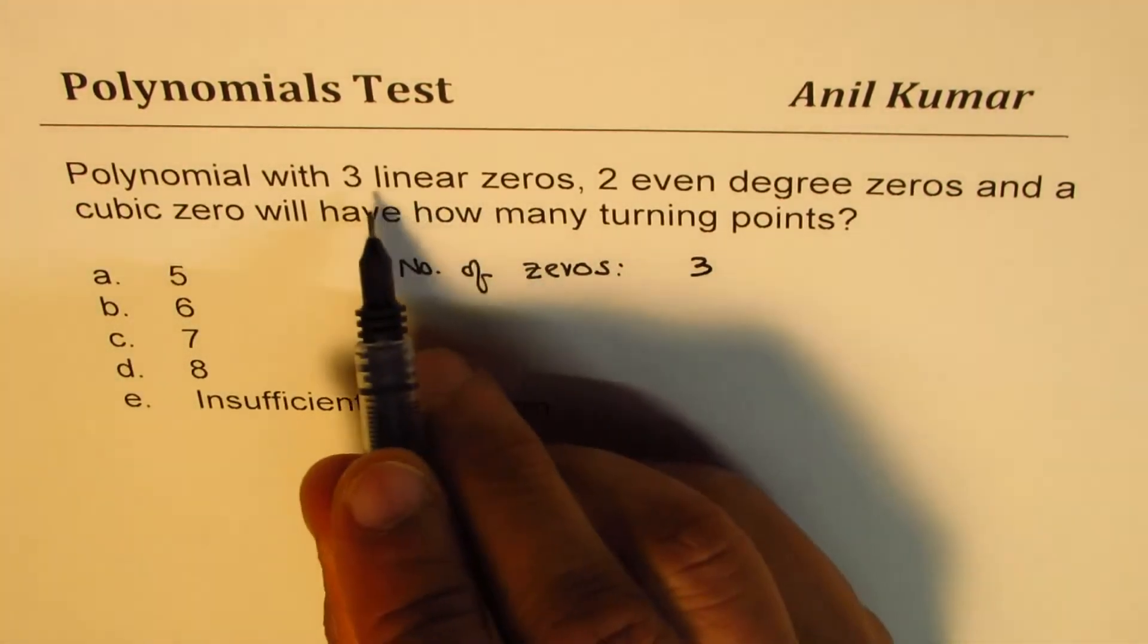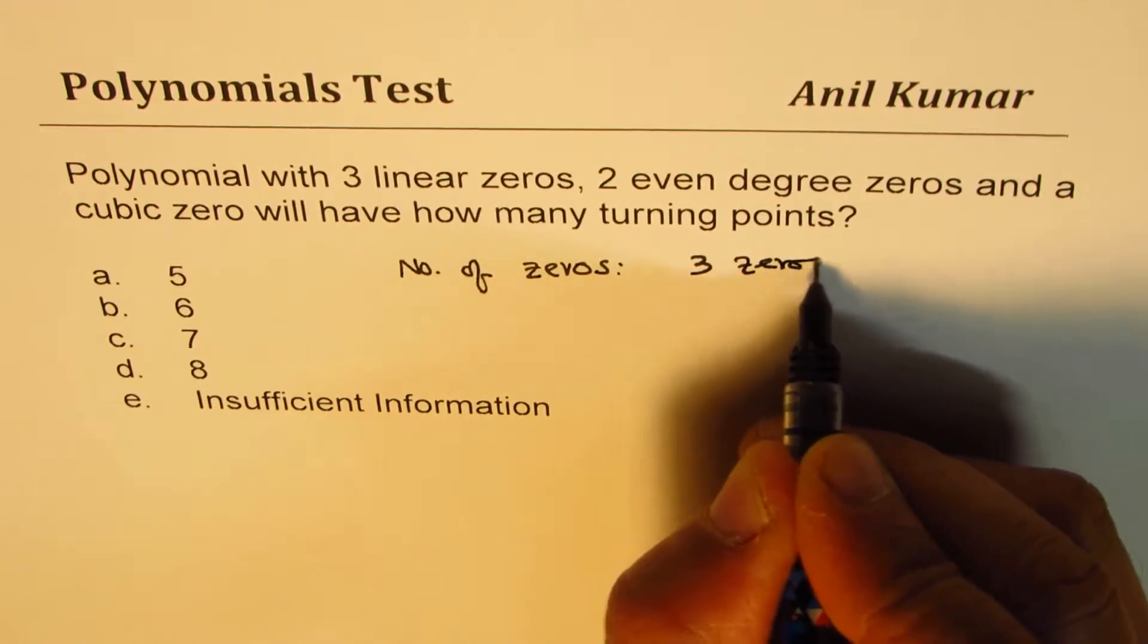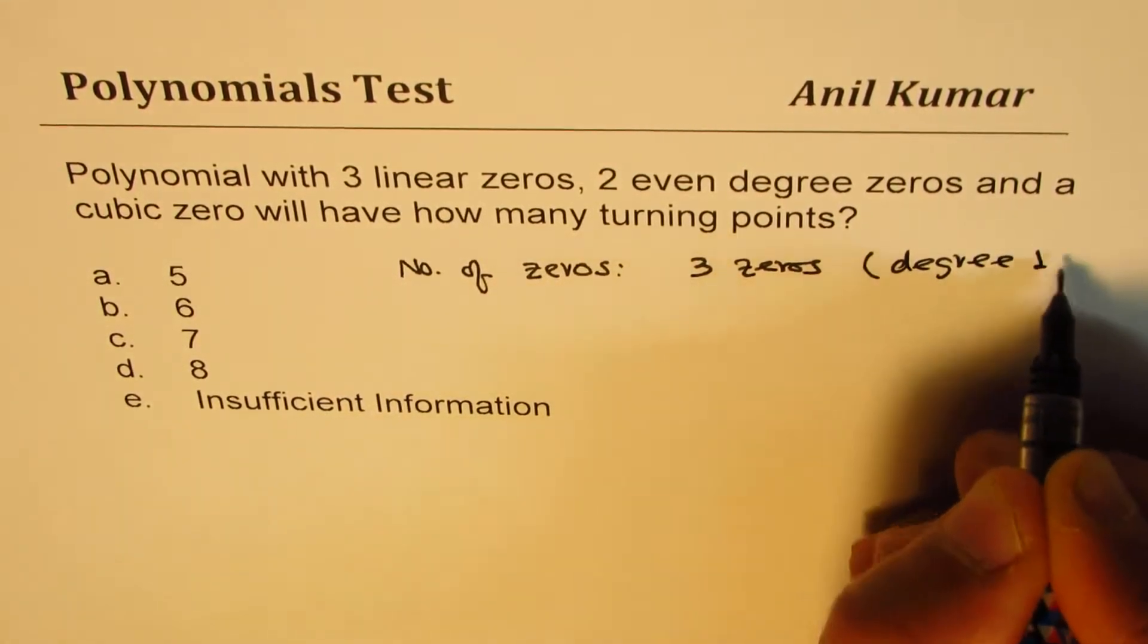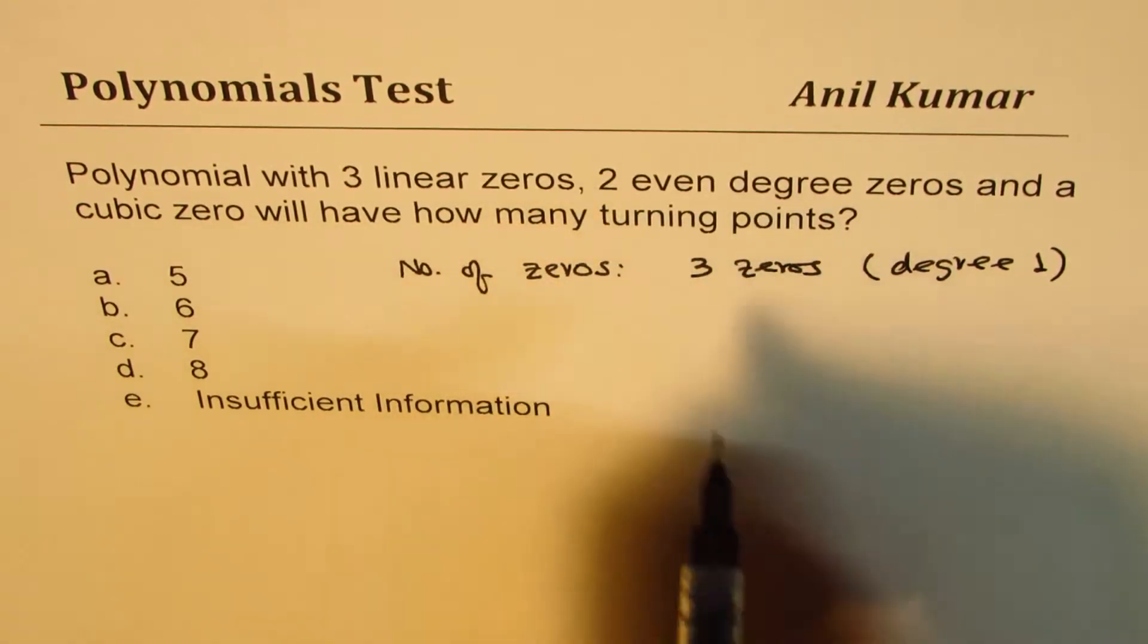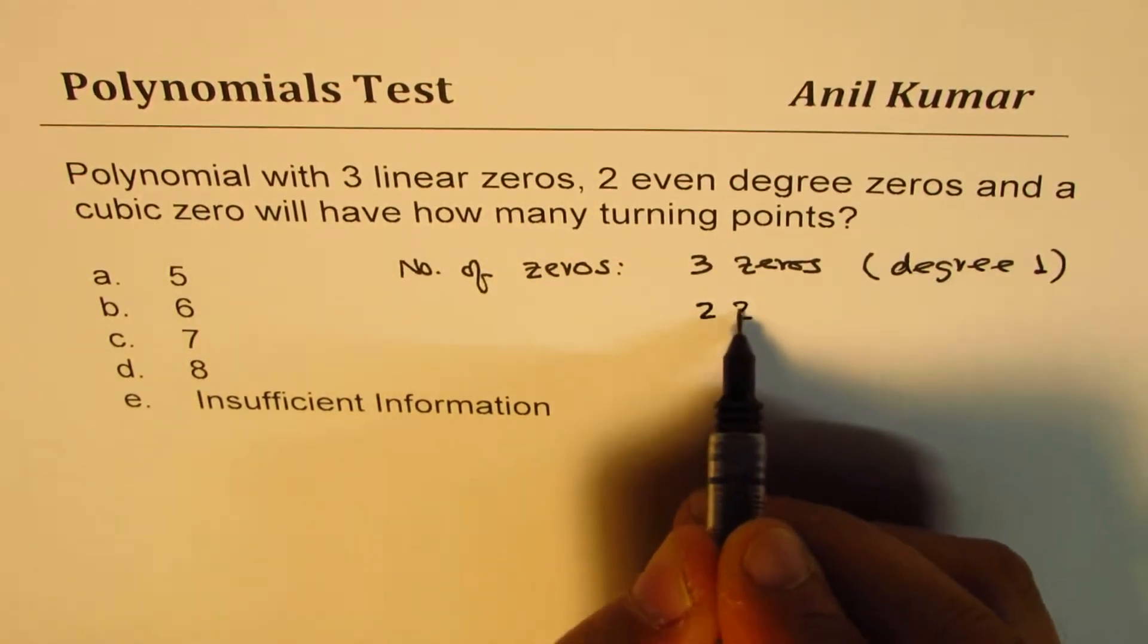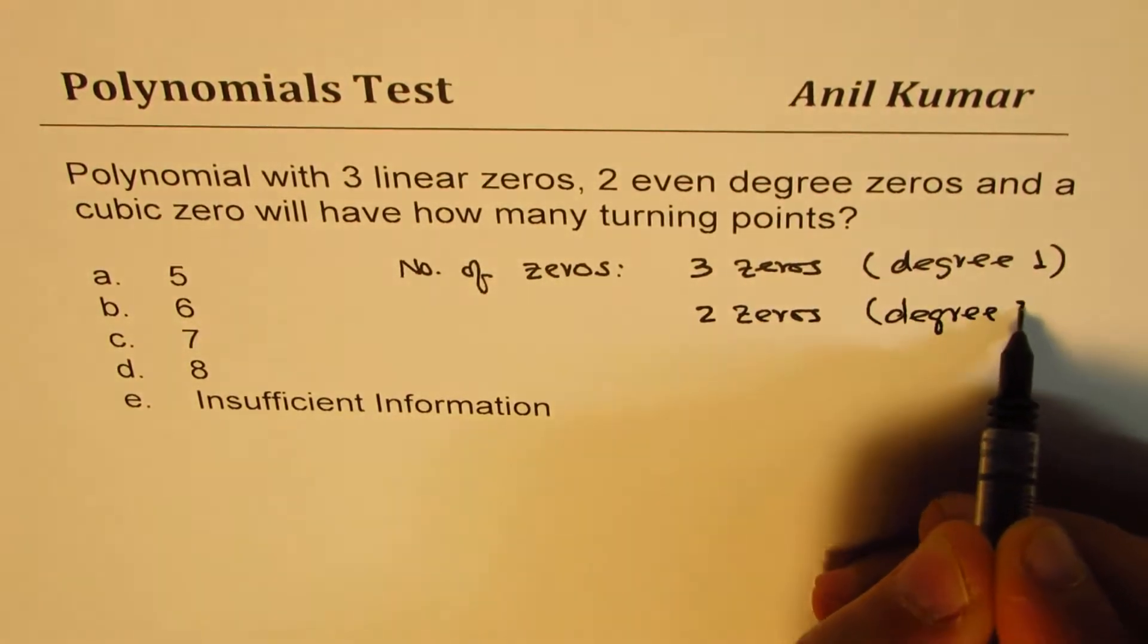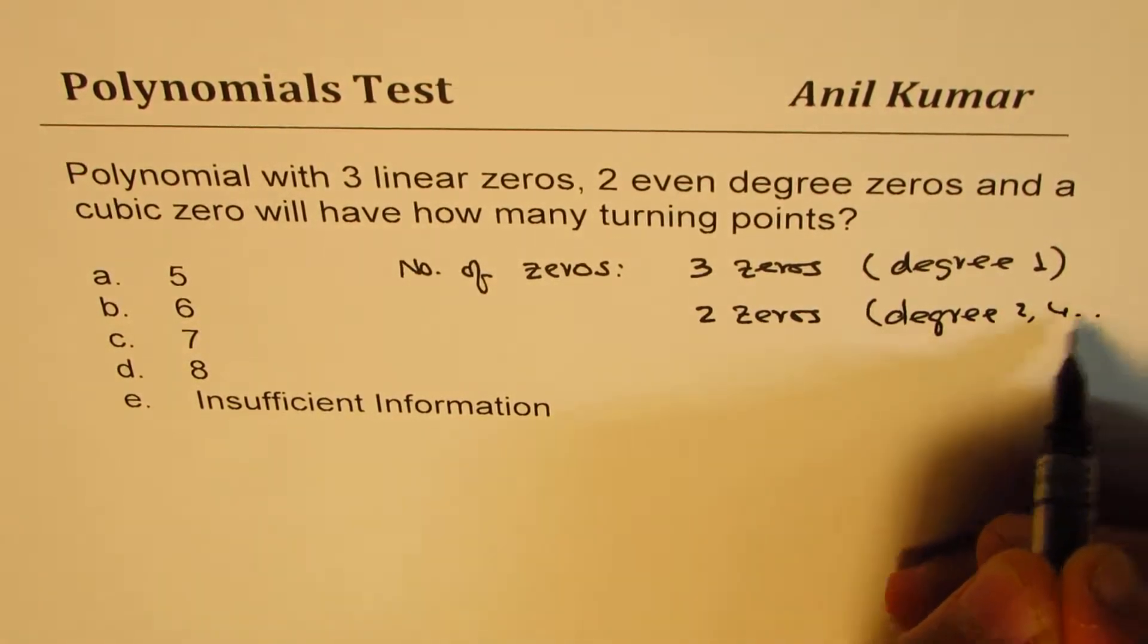Three linear means there are three zeros and all are degree one. Two even degrees so we have got two zeros which could be of degree let's say two or four, something like this.